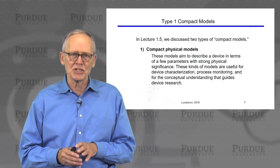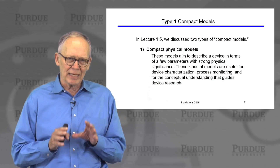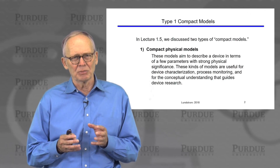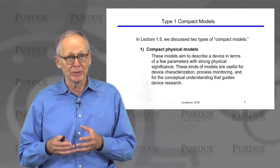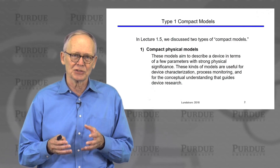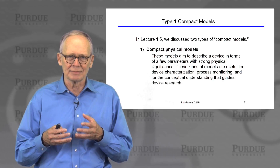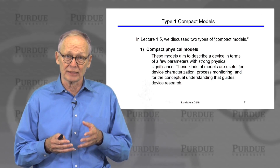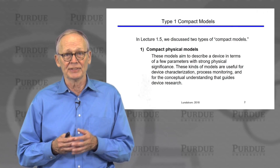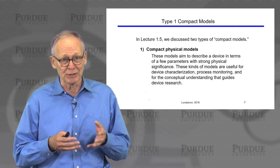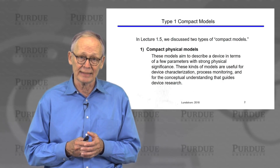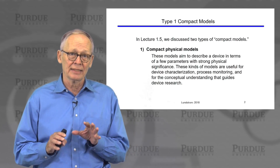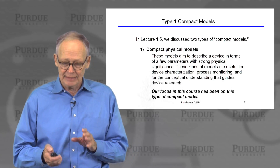In Unit 1 I mentioned two different kinds of compact models. The models we have been focusing on I referred to as compact physical models — simple analytical models that capture the essential physics and summarize our conceptual understanding of device operation. They can be useful in analyzing experiments, extracting physically meaningful parameters like transmission, mean free path, series resistances, and monitoring processes.